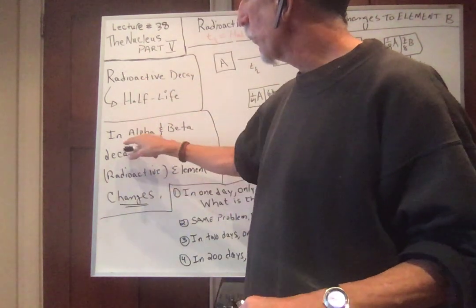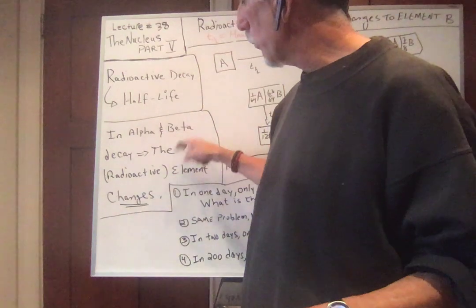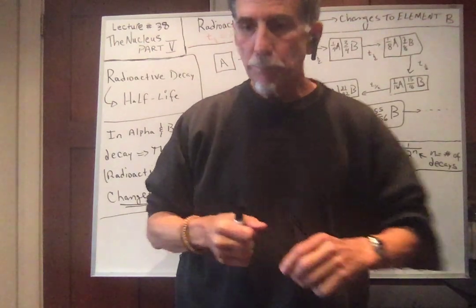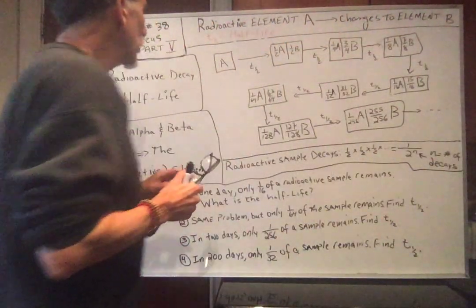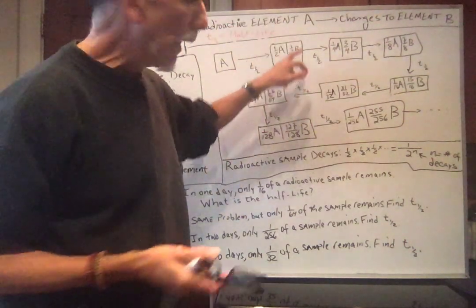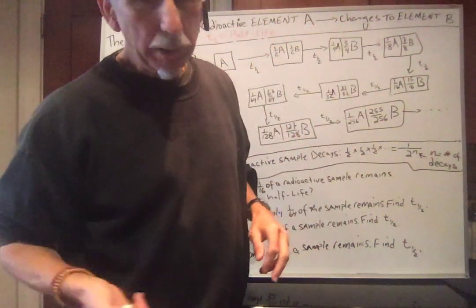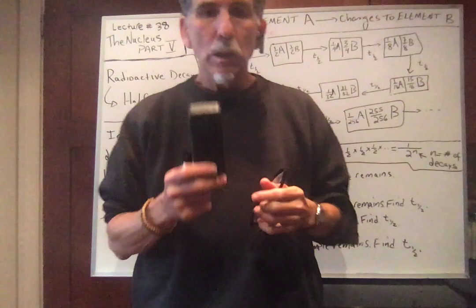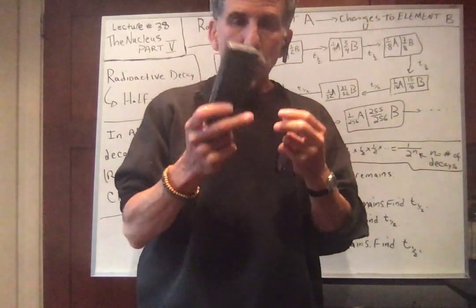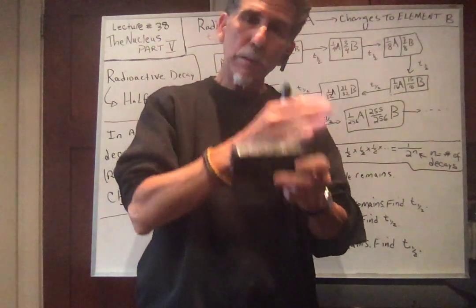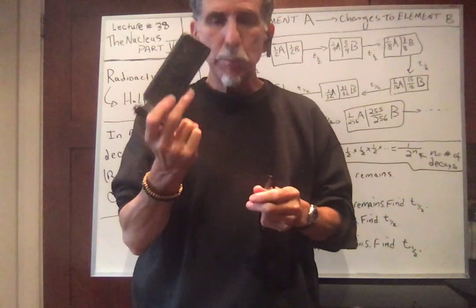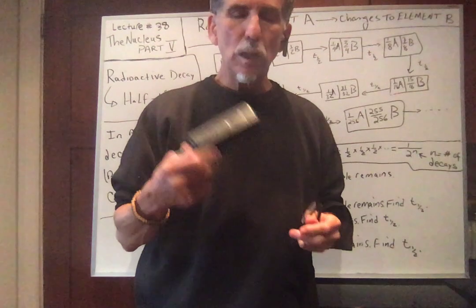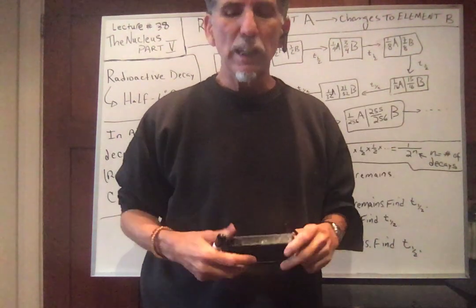We're going to talk about half-life today. We've already discussed alpha and beta decay — remember, in alpha and beta decay the element changes because the number of protons changes. So if we have a radioactive element A that undergoes alpha or beta decay, it changes into element B. If I have a pound of A, in a certain time half of the sample will still be A and half will be B. The time it takes for sample A to decay in half is called the half-life — the time it takes a radioactive element to decay in half.